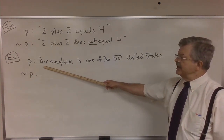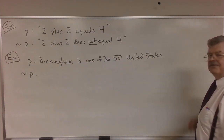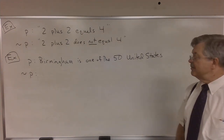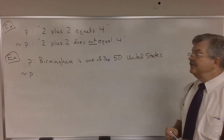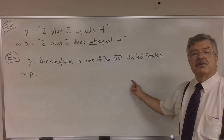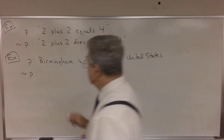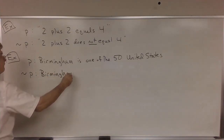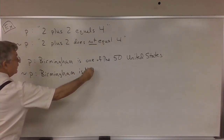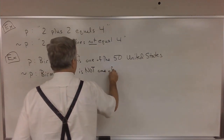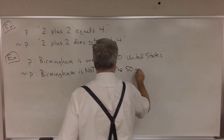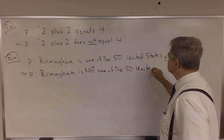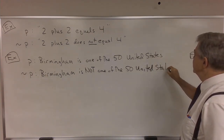Let P be the statement 'Birmingham is one of the 50 United States.' How would we negate that statement? Probably the easiest thing to do is just insert the word 'not' somewhere. If you're thinking 'Birmingham is not one of the 50 United States,' then you're absolutely right.